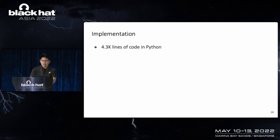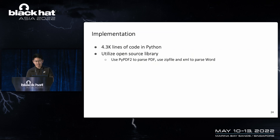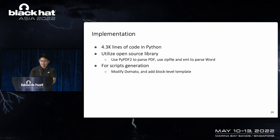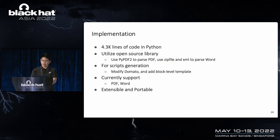For implementation, we developed Cooper in 4,300 lines of Python code, utilizing some open-source libraries. It uses PyPDF2 to parse PDF format, and zipfile and the lxml Python library to parse Word format. For script generation, we utilize Domato and improve it with block-level templates. Cooper currently supports two formats — PDF and Word — and is extensible and portable, meaning we can easily add new features or apply Cooper to other document formats with limited effort.